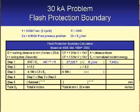You could have just copied that number down from the previous problem because it's the same. Now for step two: take the one-cycle clearing time of 0.0167 seconds and divide by 0.2 seconds, our normalized value. That gives us 0.0835.